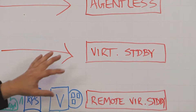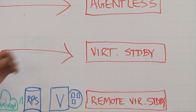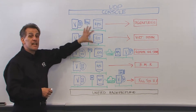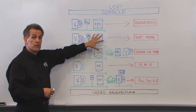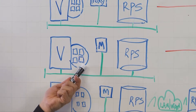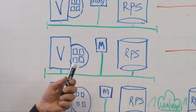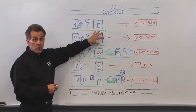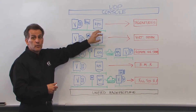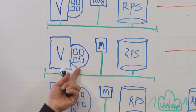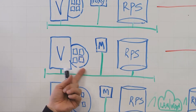The next part we look at is virtual standby — my colleague Max's favourite component. The Agentless backups are stored in the recovery point server. Should something happen to one of these virtual machines, the monitor from the recovery point server gets that last backup and brings up that virtual machine on the fly.